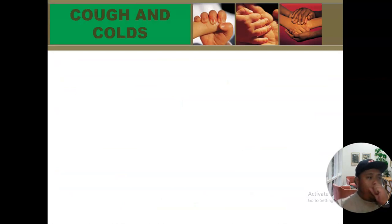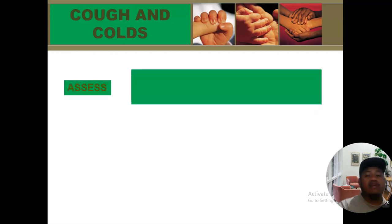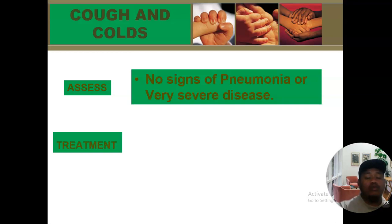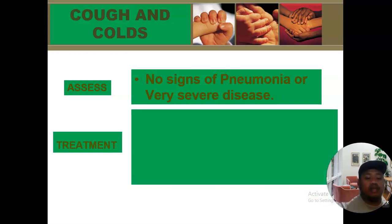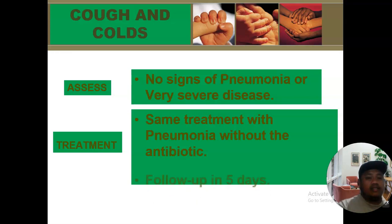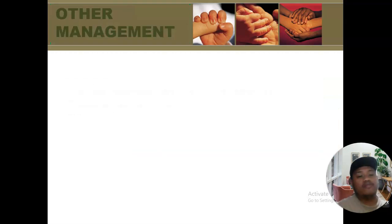The last classification is cough and colds. This classification applies if the child does not have any danger sign, stridor, chest indrawing, or fast breathing — no signs under the pink or yellow classification. The management is the same as for pneumonia, with the only difference being that no antibiotic is given — meaning no amoxicillin twice a day for five days. Follow up in five days if no danger signs appear.